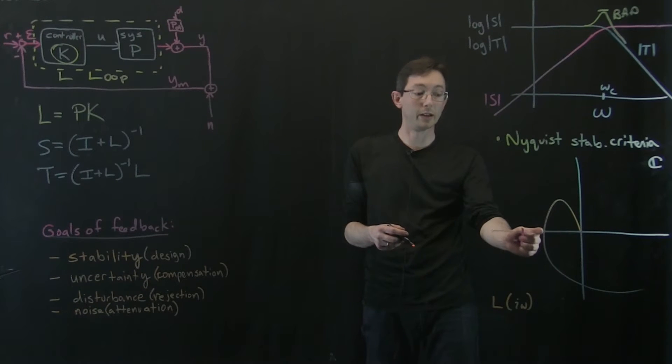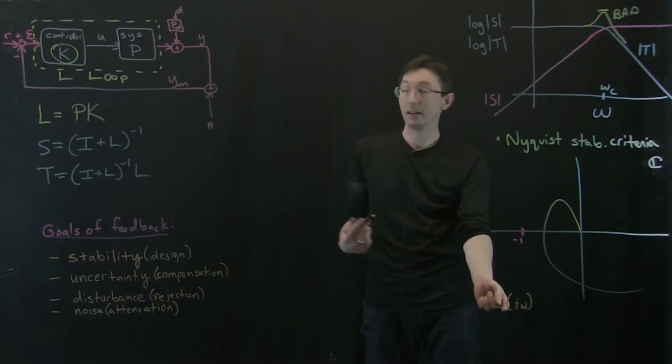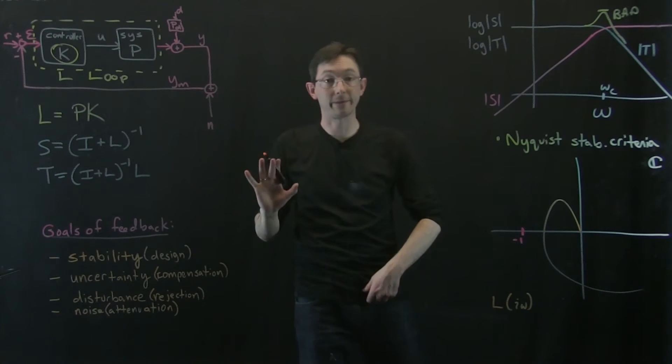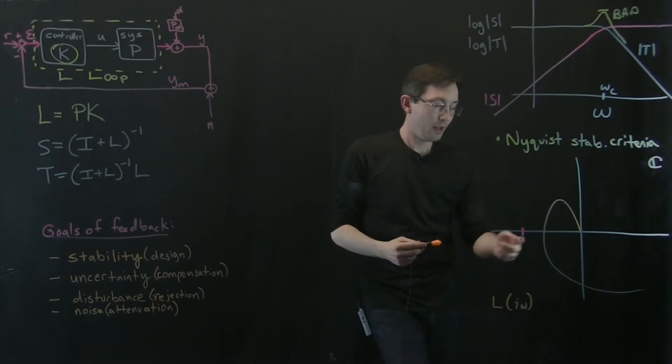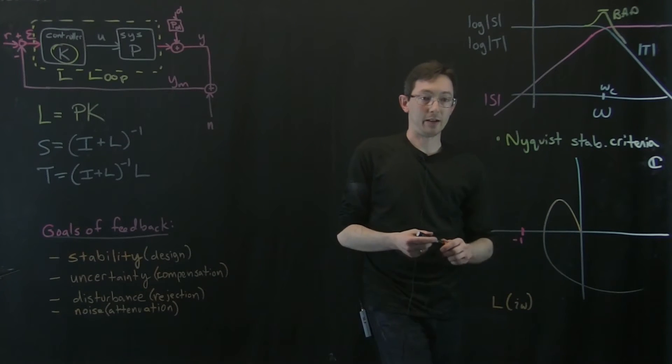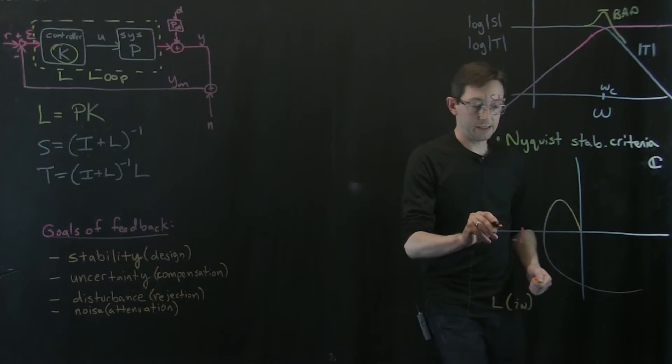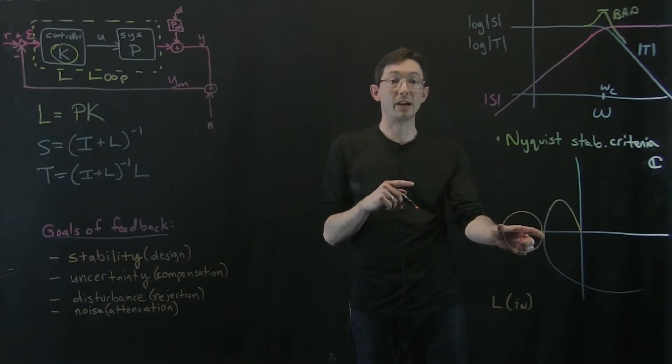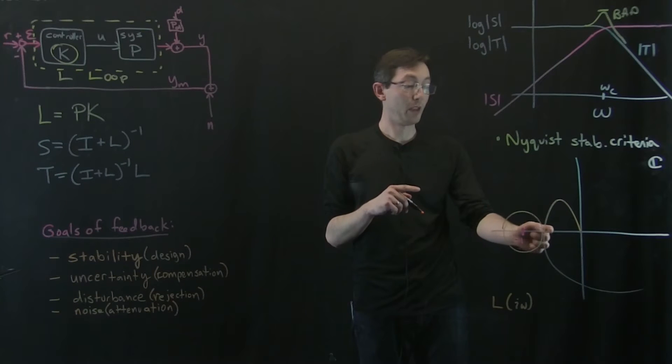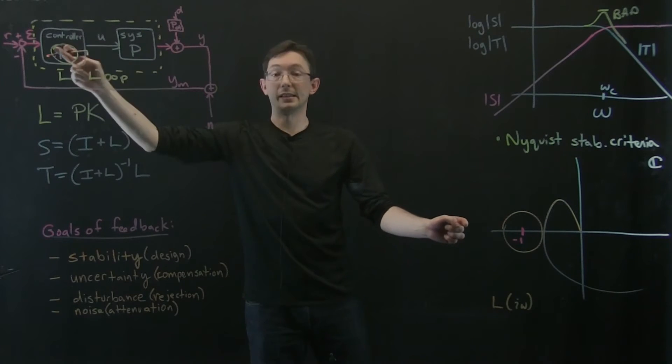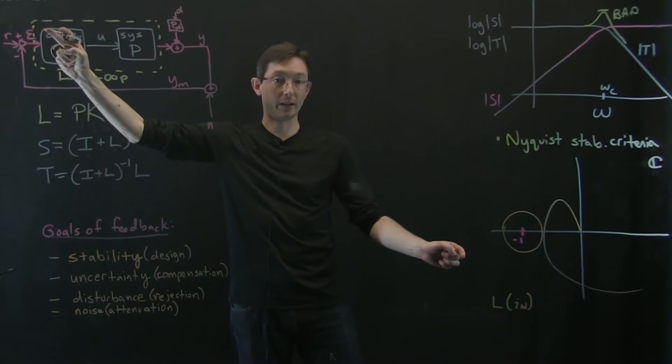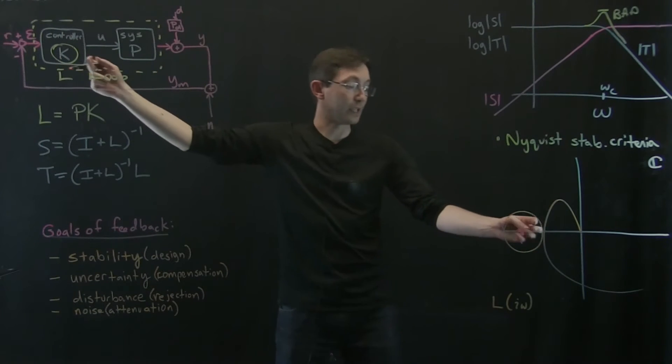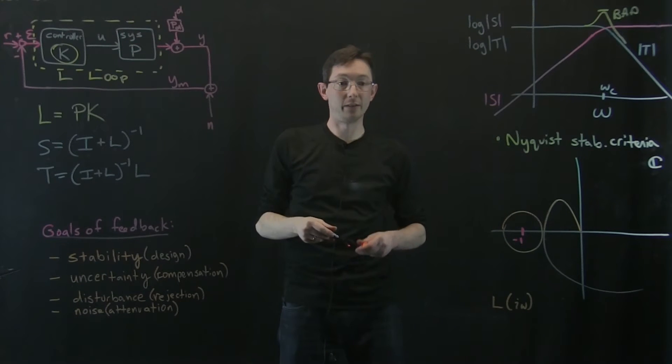And the closer it gets to negative one, the less robust that system will be when I close the loop. So I'm just telling you this as a fact. I'll give you some intuition for this in a minute. But if I plot L of i omega, this distance from this negative one point is essentially my robustness, my stability margin for this system. So if I close the loop, then this system will go unstable if I increase K enough that this passes through the point negative one.